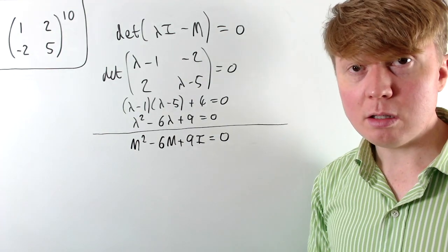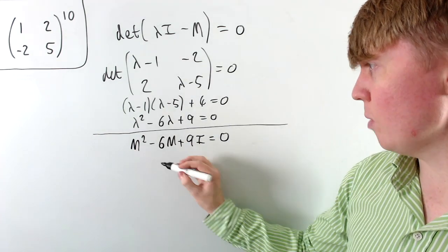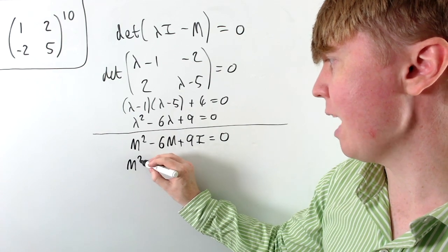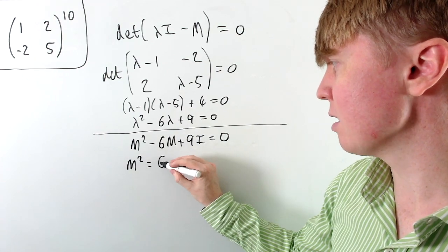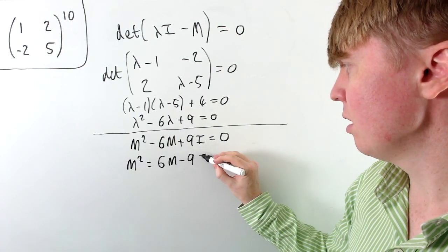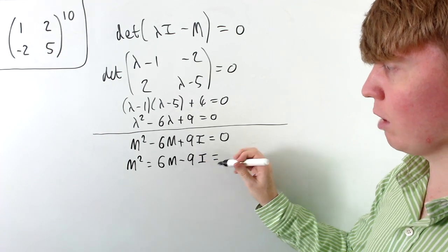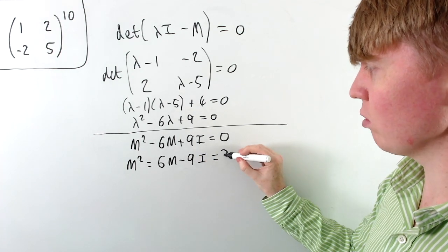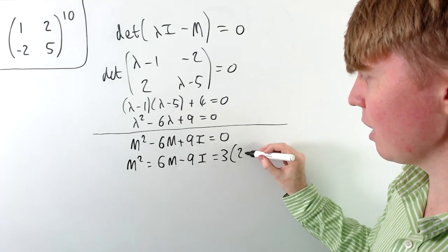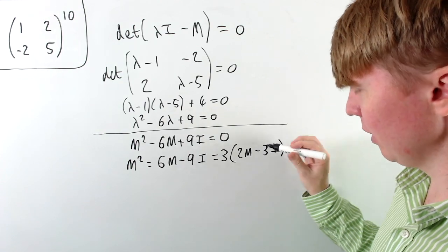This turns out to be really useful. Making M squared the subject, we get M squared equals 6M minus 9I. We can even factor out a 3, giving us M squared equals 3 times (2M minus 3I), which will help us later on.